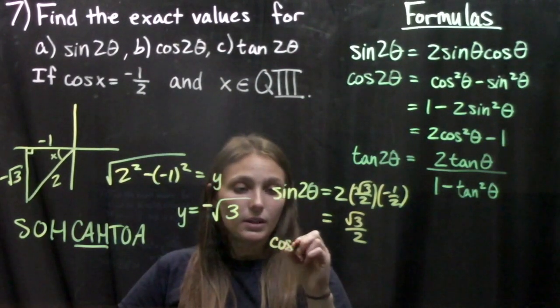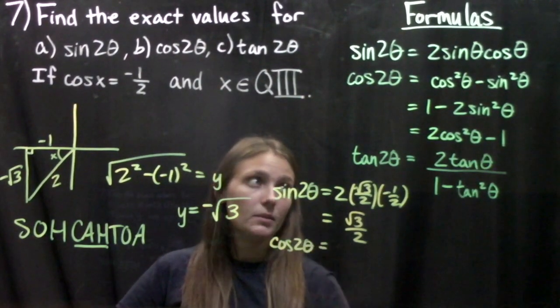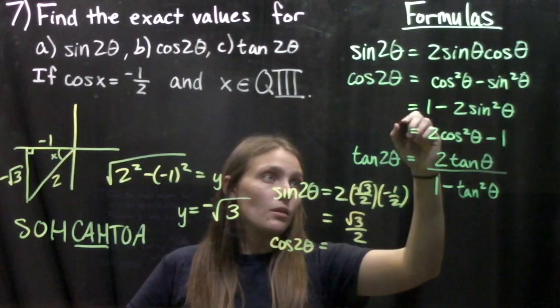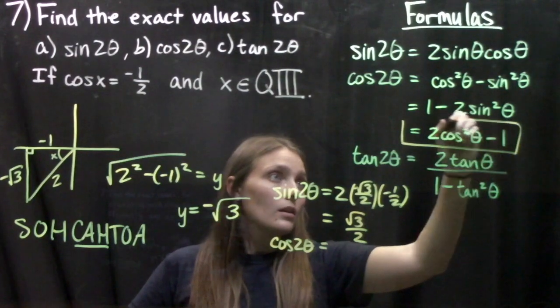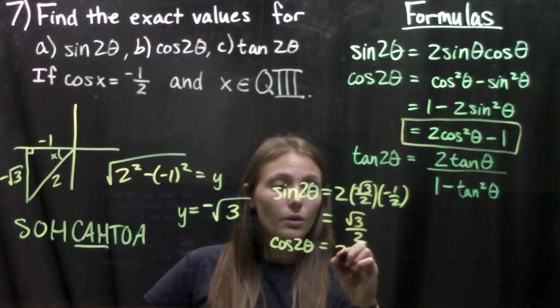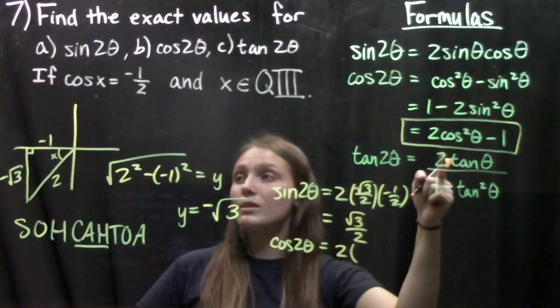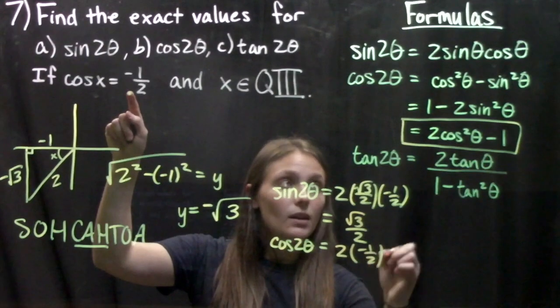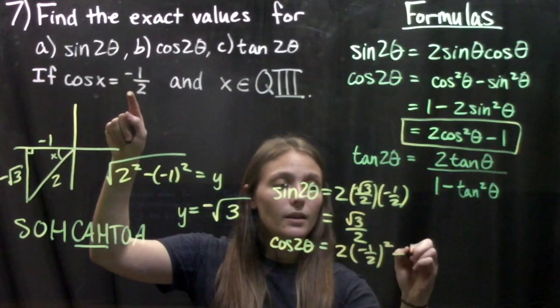Now when we do the cosine of the double angle we have a bunch of formulas to choose from. I'm going to use this formula here since we're already given the cosine of the angle. So we'll plug in 2 times cosine theta squared. The cosine of the angle is negative half, and we'll square it and subtract 1.